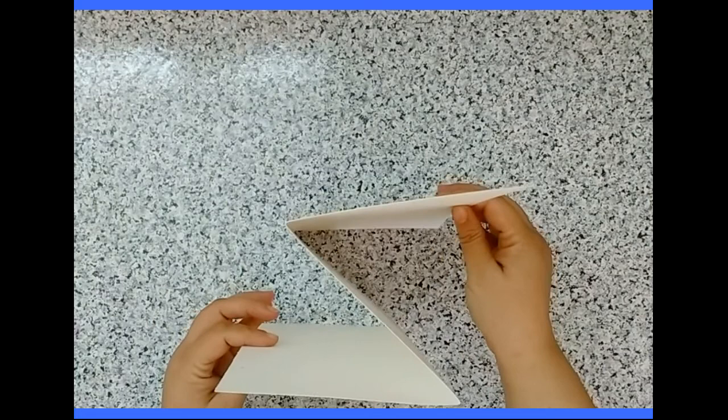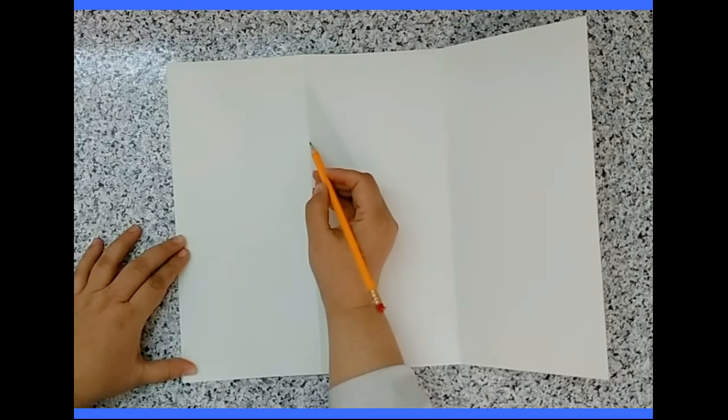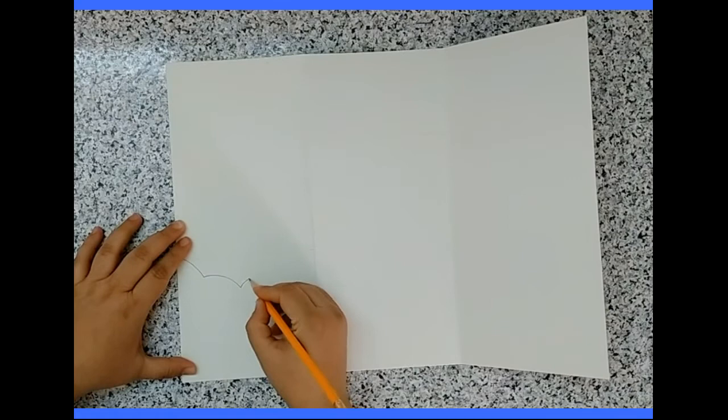Think about what you would like each section to include. Now we are going to make a landscape, so each layer should be a different scene: trees, mountains, ocean, sky, or anything that you can think of that represents a landscape. Now with a pencil, begin drawing horizon lines to represent the different layers of your landscape.